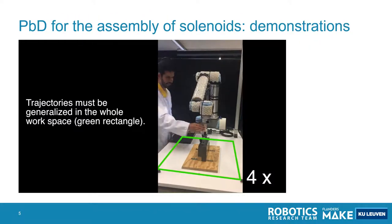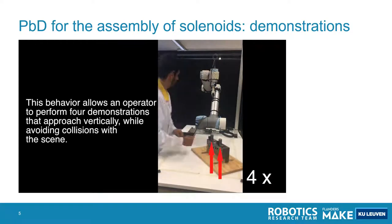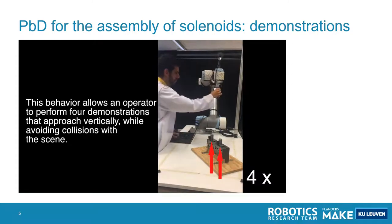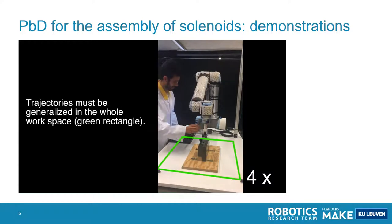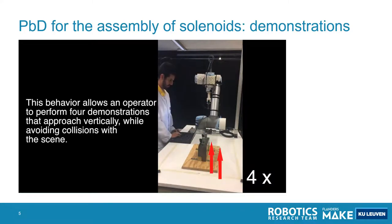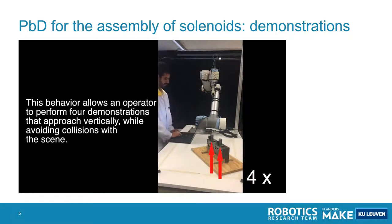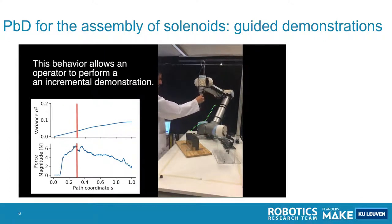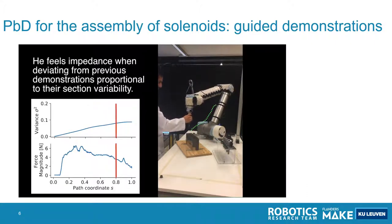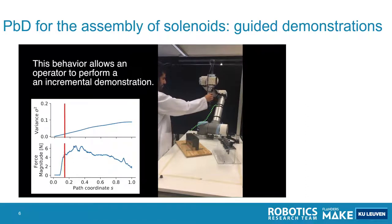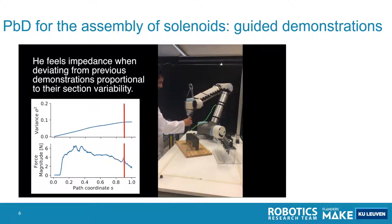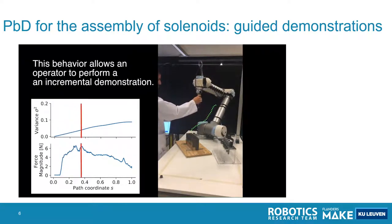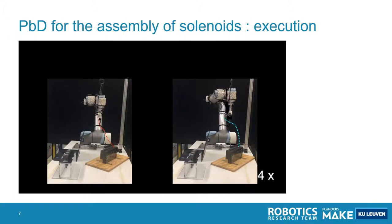A first application of this programming by demonstration technique is an application for the assembly of solenoids in a block. These solenoids need to be inserted into the block, but this block can be located in different locations — its location is observed by a camera system. First we need to demonstrate a number of feasible trajectories, which you can see being done right now. After these demonstrations, you can also use guided incremental demonstrations, such that information from previous demonstrations is already used to impose a kind of impedance behavior on the robot, making it easier to demonstrate the task. You can tune a demonstration by letting the robot go and stopping it when it starts deviating from what you want.